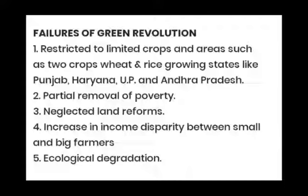Number 4: Income disparity between big and small farmers continued to increase, as the rich became richer and more prosperous while small farmers could not afford to buy the expensive inputs of the green revolution. It also had a harmful impact on the environment — it led to a decrease in soil fertility due to use of chemical fertilizers, and assured irrigation continuously led to depletion of groundwater resources.